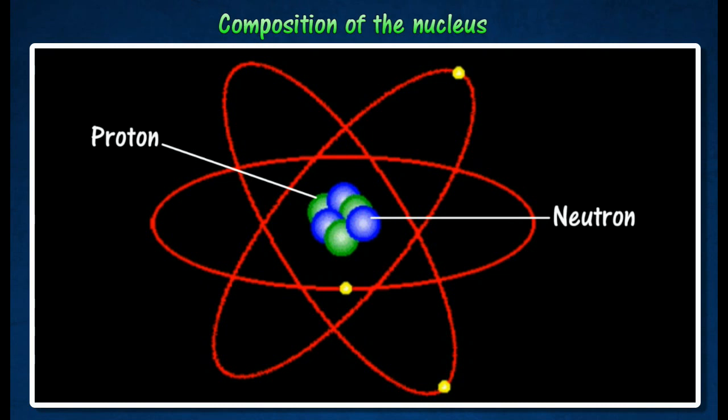The nucleus contains most of the mass of an atom. The nucleus is surrounded by electrons which are negatively charged. Electrons are very small and move around in electron shells.